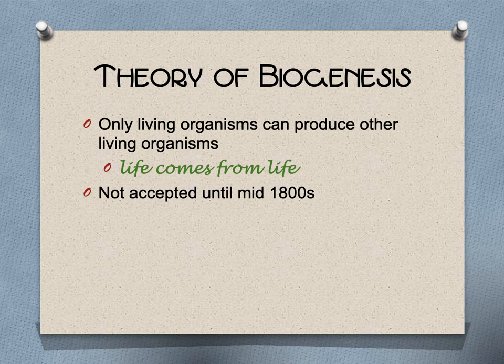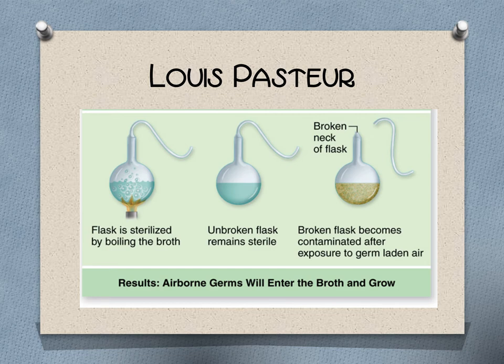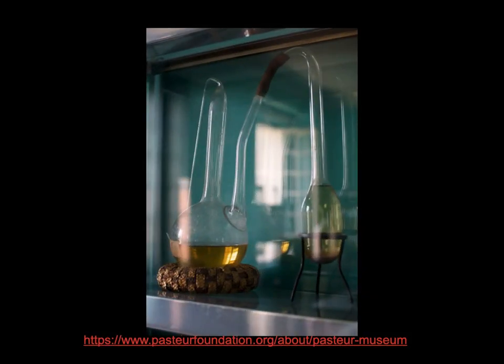That gives us the theory of biogenesis — life comes from life. Surprisingly, this was not fully accepted until the mid-1800s, mainly due to Louis Pasteur, who put broth in a swan-neck glass container, boiled it to kill anything in it, and let it sit. The design allowed air to move in and out but bacteria and other life forms could not get in — and so there was no life. When he broke off the neck and let air circulate freely, bacteria fell in and you got growth in the broth. Actual pictures from his experiments from the 1800s show no growth whatsoever in the sealed flasks.